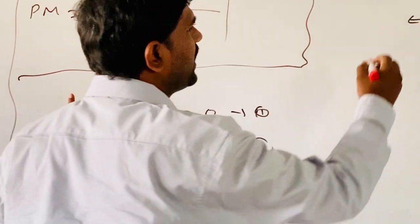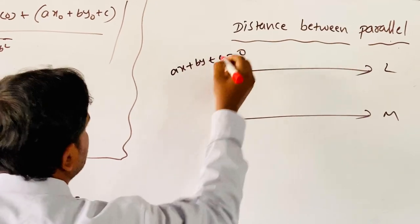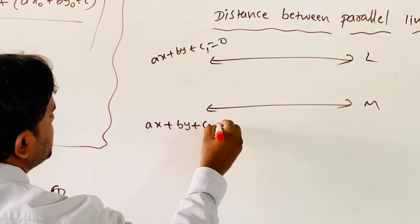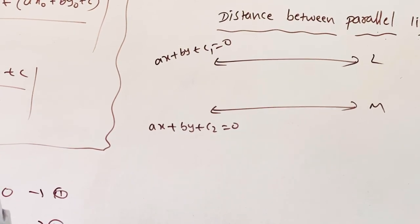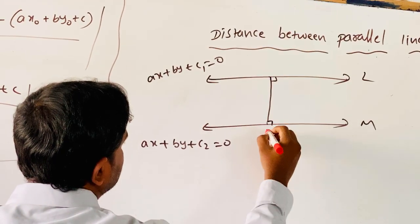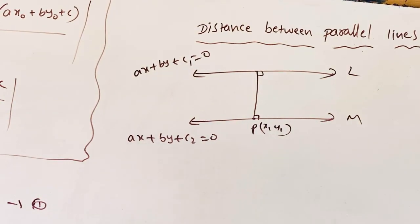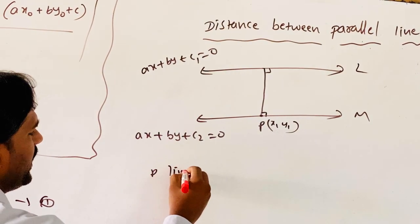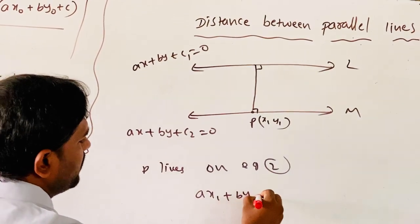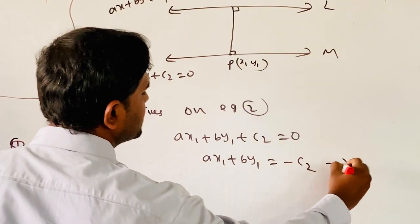The two parallel lines are: the first line AX plus BY plus C1 equals 0, and the second line AX plus BY plus C2 equals 0 — only the constants differ. The distance between them: let the intersection point be P with coordinates (X1, Y1). Since P lies on Equation 2, substituting gives AX1 plus BY1 plus C2 equals 0, so AX1 plus BY1 equals minus C2. Consider this as Equation 3.